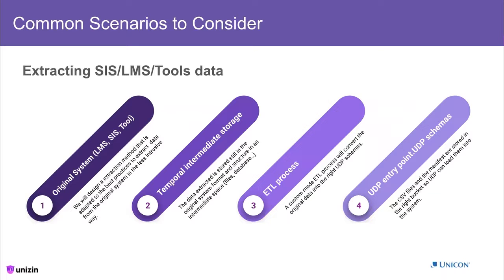Institutions currently using the UDP are all using Canvas, but we want to open UDP to other LMSs and SIS systems. At this moment, for example, we are working on a D2L integration. To do that, UDP has an LMS standard ingesting schema. We're creating an ETL process that exports data from the LMS, stores it in intermediate storage, launches an ETL process that converts the data to the expected UDP schema, and sends the resulting CSV files to the right bucket. This process is being designed in GCP infrastructure in a way that will not be very difficult to adapt to any other source of data. In the future, we could do Moodle, Blackboard, Sakai, or any other system if an institution requires it.